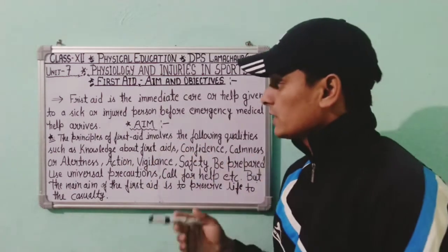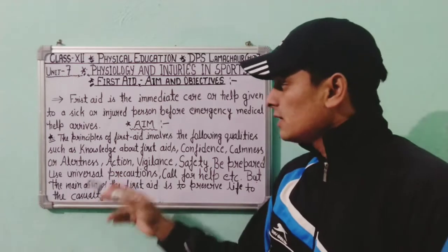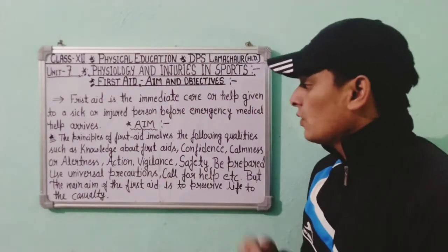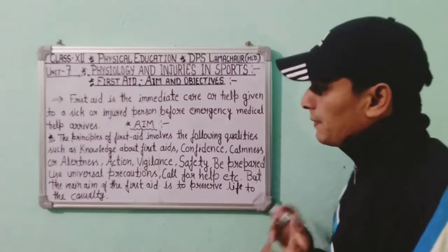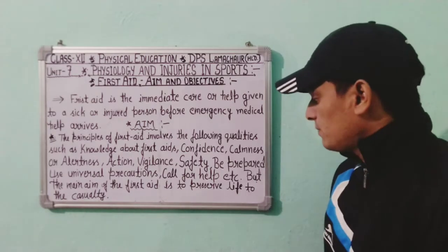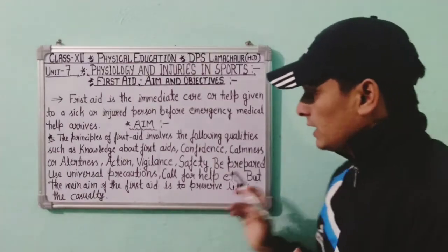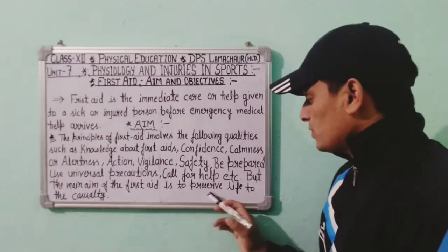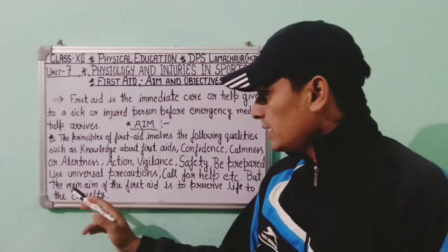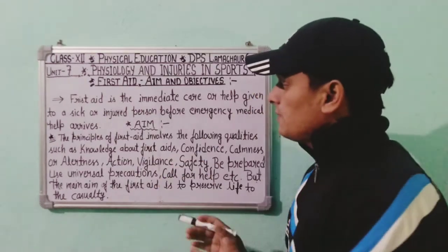The principles of first aid involve the following qualities: knowledge about first aid, confidence, calmness or alertness, action, vigilance, safety, being prepared, using universal precautions, and calling for help. But the main aim of first aid is to preserve life for the casualty.